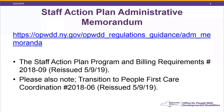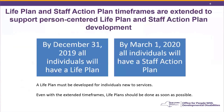Regarding the Life Plan and Staff Action Plan timeframe: these were extended. By December 31st, 2019, all people receiving services should have a Life Plan in place. By March 1st, 2020, all individuals will have a Staff Action Plan in place. A Life Plan must be developed for individuals new to our service system. Even with these extended timeframes, the expectation is that Life Plans are being completed as soon as possible.